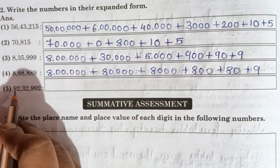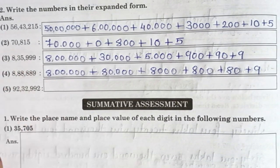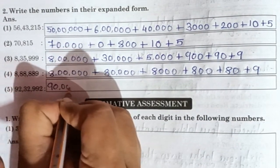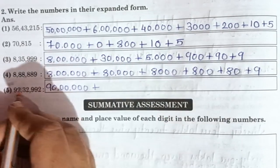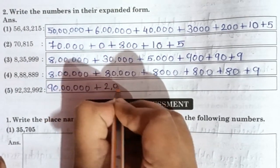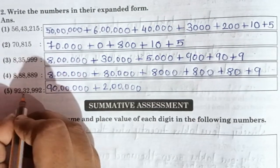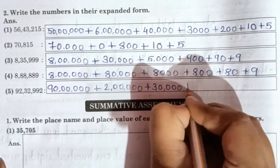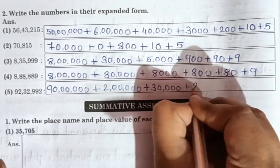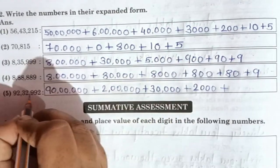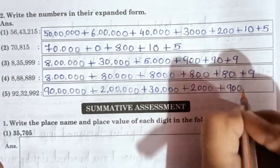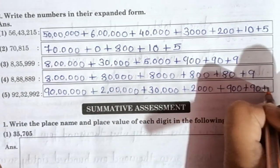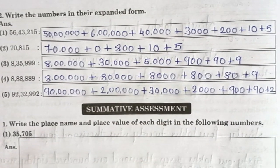Fifth number is 92,32,992. 9 is at ten-lakhs place: six zeros, so 90,00,000. Plus 2 at lakhs place: 2,00,000. Plus 3 at ten-thousands place: 30,000. Plus 2 at thousands place: 2,000. Plus 9 at hundreds place: 900. Plus 9 at tens place: 90. Plus 2 at units place: 2. Is that clear how you are supposed to expand this number?